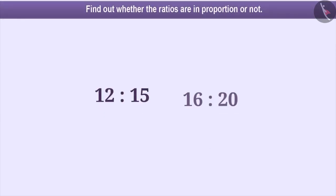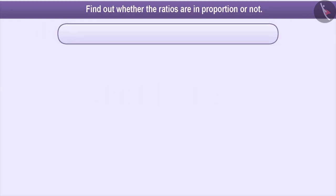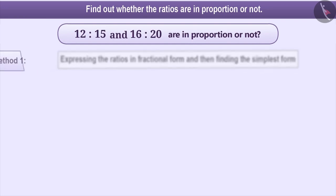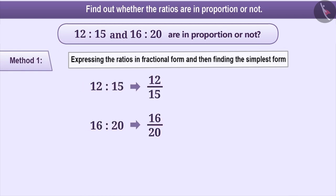Let us now see how to find whether two ratios are in proportion or not. Suppose we need to check whether 12 is to 15 and 16 is to 20 are in proportion or not. Let us learn some interesting ways to find this out. We have already learned one method, in which we express both the ratios in fractional form and find their simplest form. To do so, we find the HCF of the numerator and denominator of each fraction.